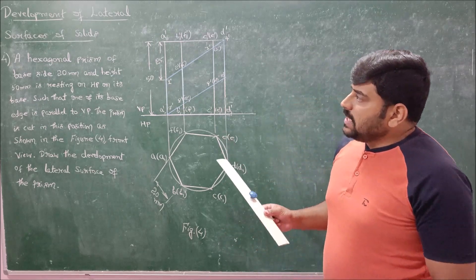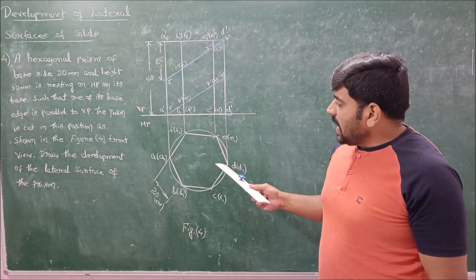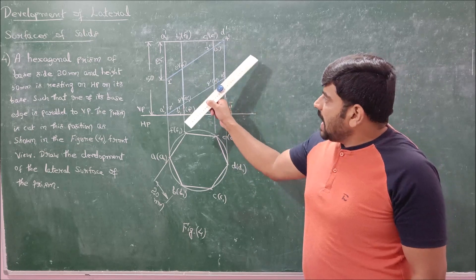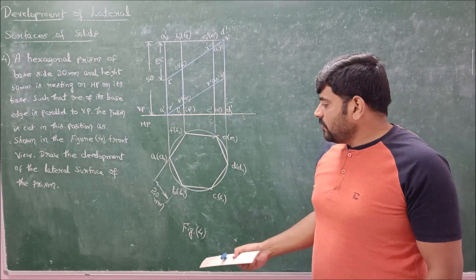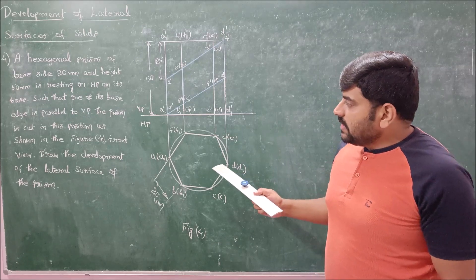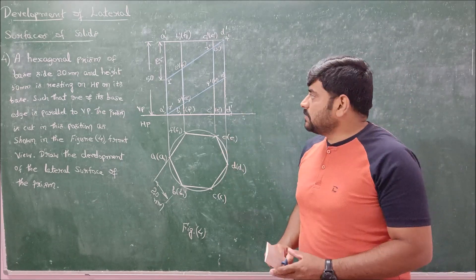For problem number 4, the front view and top view of the hexagonal prism have been presented, which has been cut by the two cutting planes as shown in the front view of figure 4. So this is figure 4. For this we should do the development of lateral surface of this hexagonal prism.